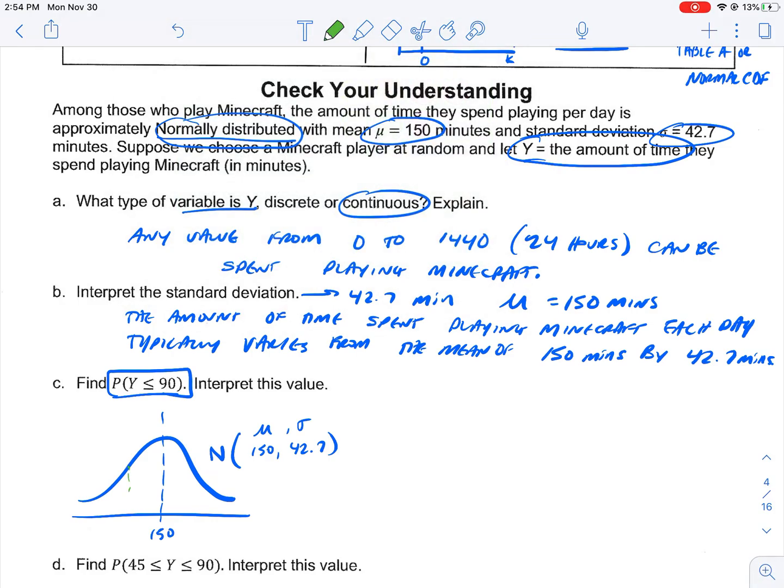And so, our value that we want is down here. And we want it to be less than that, so it's this part over here. Why draw the picture? Remember, this is helping us remember exactly what area we're finding and that's going to help us when we use our table A or our normal CDF. So, this is the area that we're finding.